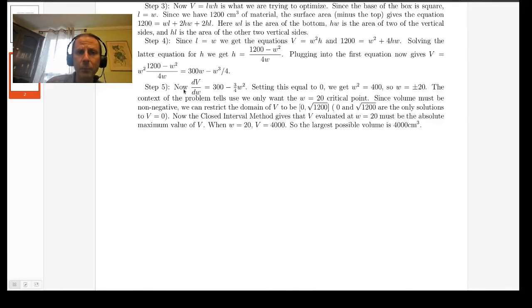Now for our problem we had gotten V to equal 300W minus W cubed over 4. So we are first going to find the derivative dV/dW is just 300 minus three-fourths W squared. To get the critical points we set this equal to zero. Setting it equal to zero you quickly get that W squared just has to be 400 so W is plus or minus 20. However the context of the problem says that W being a distance has to be a positive number so we can discard the minus 20. So W equals 20 is the only critical point.